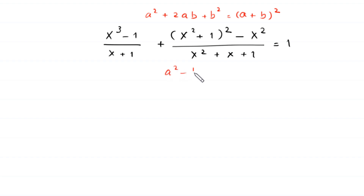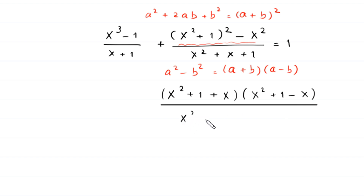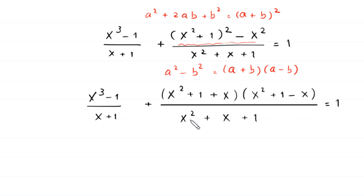Now by using the algebraic identity a² - b² = (a + b)(a - b), this (x² + 1)² - x² will become (x² + 1 + x)(x² + 1 - x), divided by x² + x + 1, plus (x³ - 1)/(x + 1), equals 1.